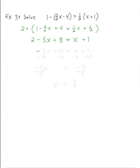Continuing to simplify, I would have negative 3x plus 10 on the left is greater than x plus 1 on the right. And as before, I will move my variable terms to the left. Negative 3x minus x is negative 4x. And let me subtract 10 from both sides. And so negative 4x is greater than negative 9.